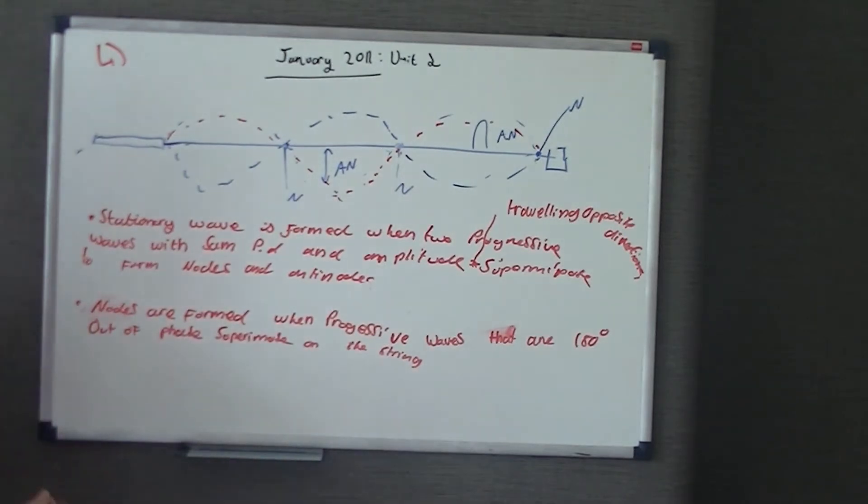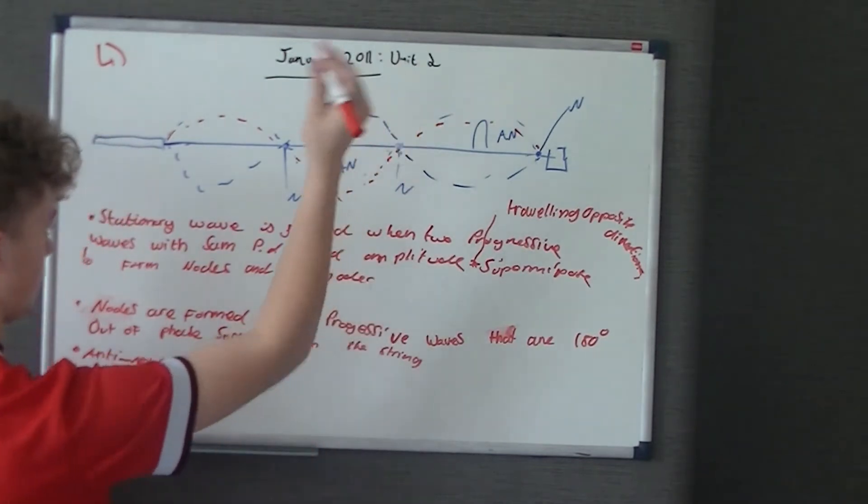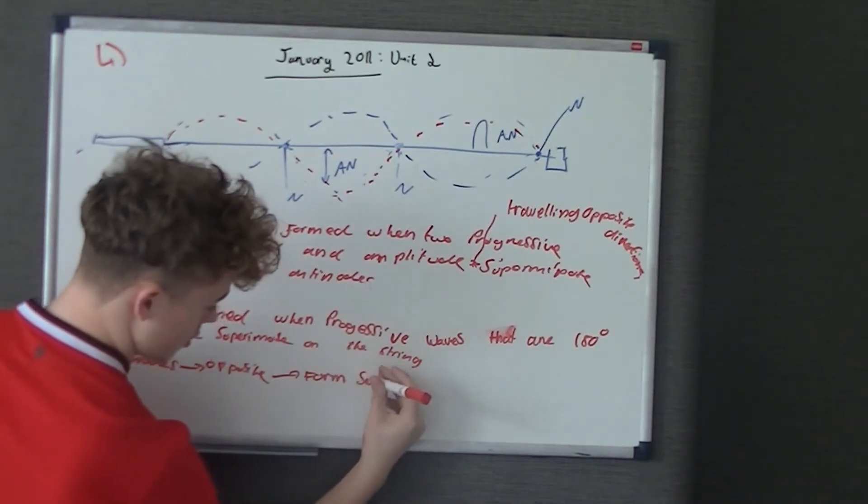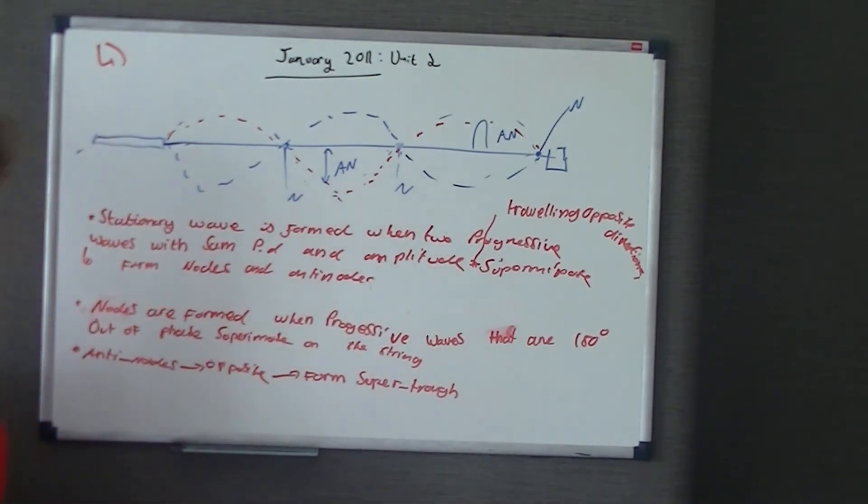And then the antinodes are gonna be the opposite. So, I'll just put antinodes, and I'm just gonna label it as opposite. But obviously, what you'd do when you're writing the answer to the question, you wouldn't put opposite. You'd just write this sentence out, except you'd do it the opposite way round. And instead of them being out of phase, they are in phase with the same amplitude and the same phase difference. And they superimpose to create a super trough or super crest. I'm just gonna put super trough as it looks a bit better.